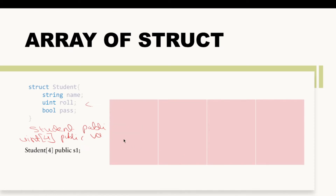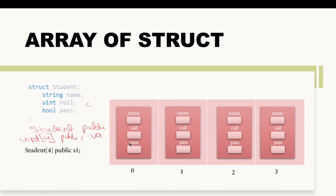In memory this will look something like this: an array will be created with index numbers 0, 1, 2, and 3. Inside each index of the array we can store the entire structure data — the entire student data. So at index 0 I can store data for one student, at index 1 for another, and so on. By this I'm able to store the data values of four students.